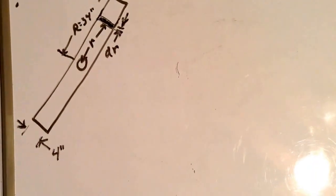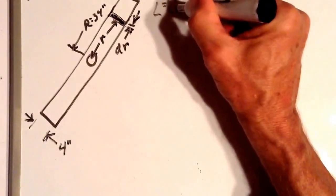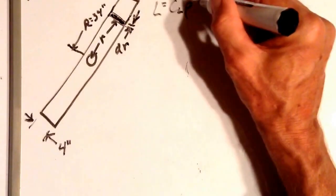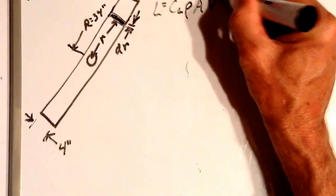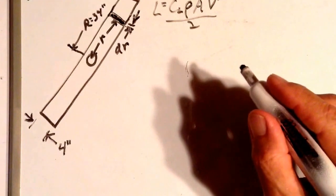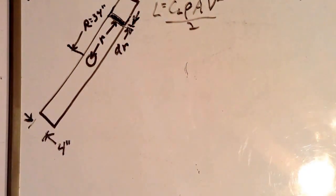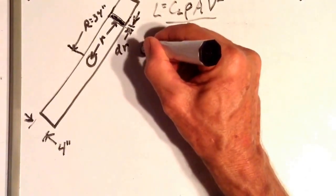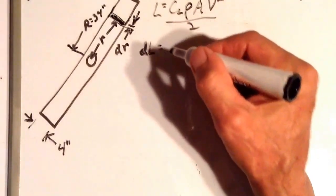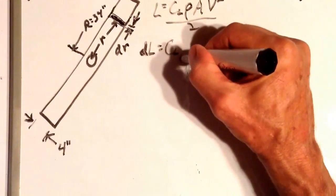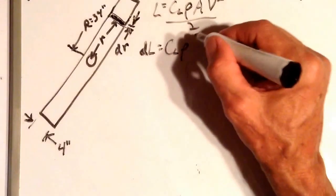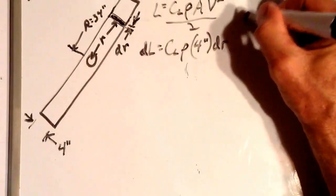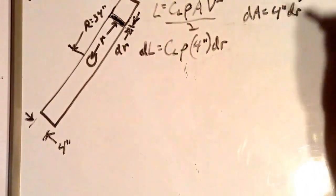The lift formula for a wing: lift equals coefficient of lift times rho (density) times wing area times velocity squared over 2. The lift generated by our little section of the propeller — we call it dL, a little sliver of lift — equals the coefficient of lift times rho times our little sliver of area, which is 4 inches times dr, times velocity squared over 2.